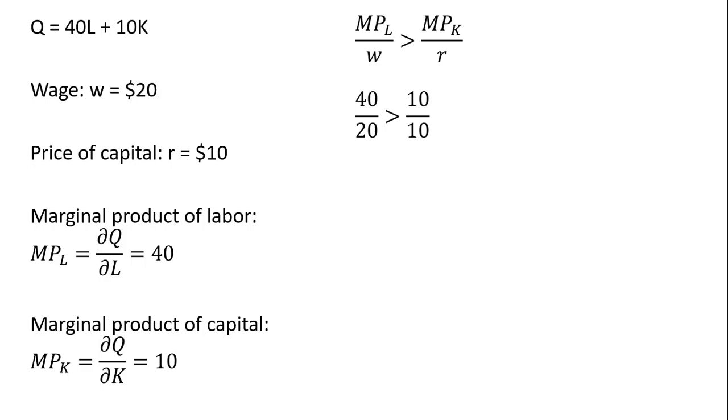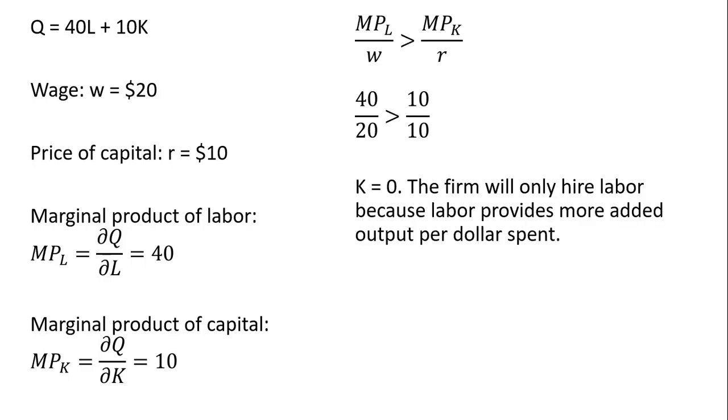So if you were to spend one more dollar on labor, your output would go up by 2, whereas if you were to spend one more dollar on capital, your output would only go up by 1. So you get more bang for the buck by buying the labor input. So the firm will not buy any units of capital, it will only employ labor, because labor provides more added output per dollar spent.